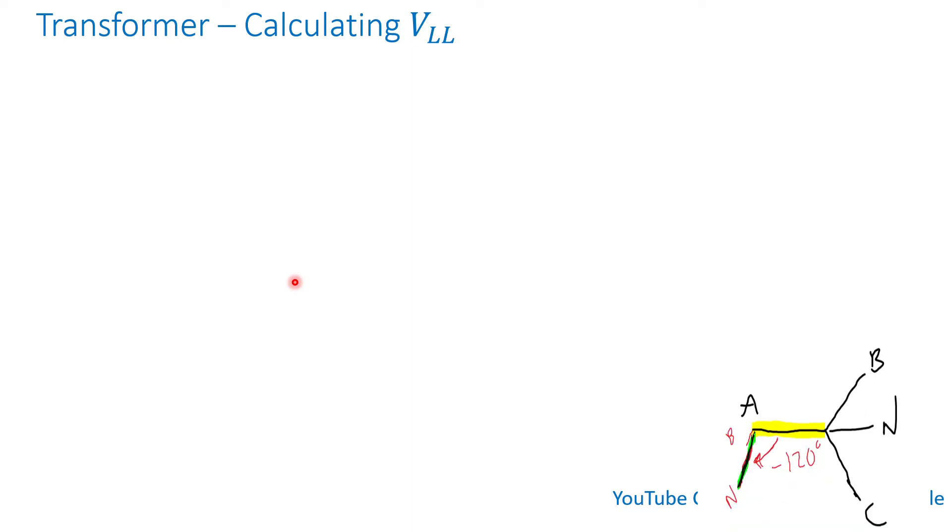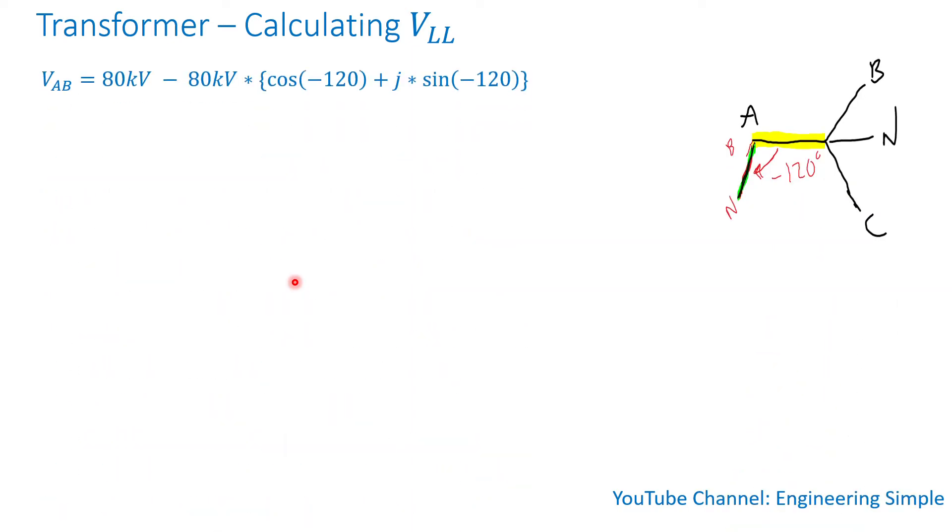So if I keep going, I can write it as 80 kV minus 80 kV times cosine of minus 120 degrees plus j times sine of minus 120 degrees. So VAB equals 80 kV minus 80 kV times negative 0.5 minus j times 0.866.